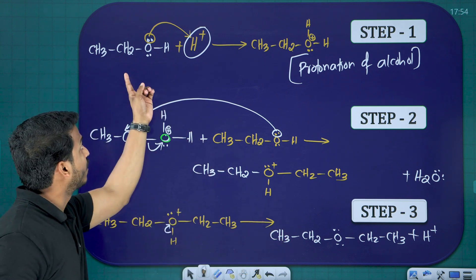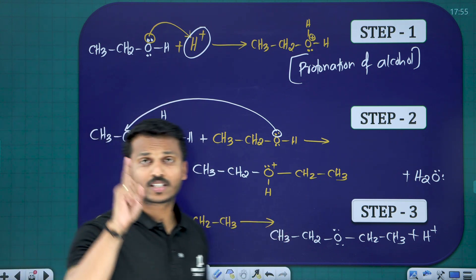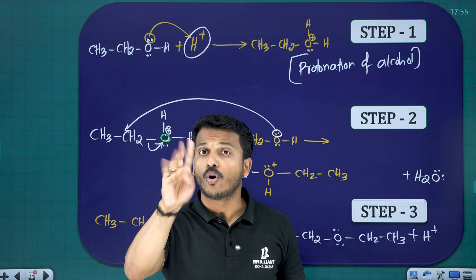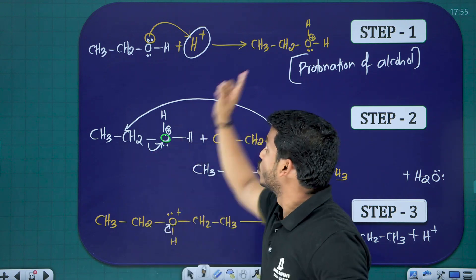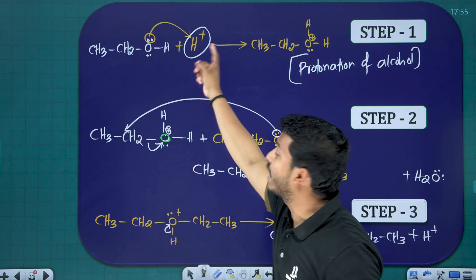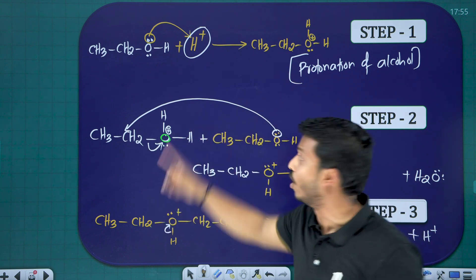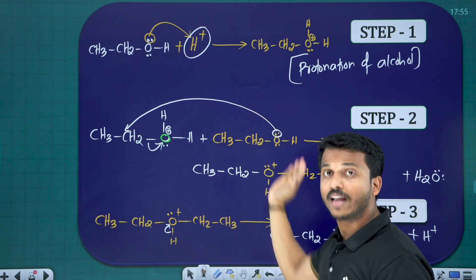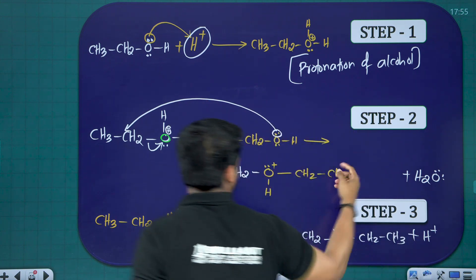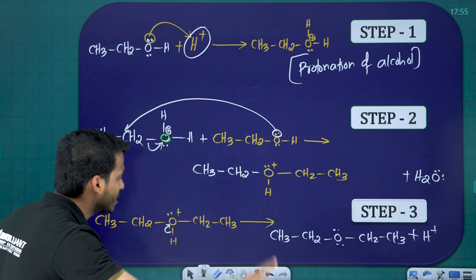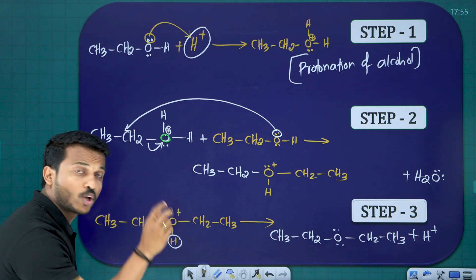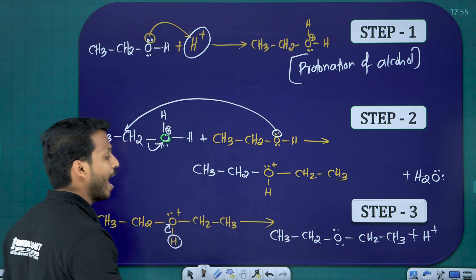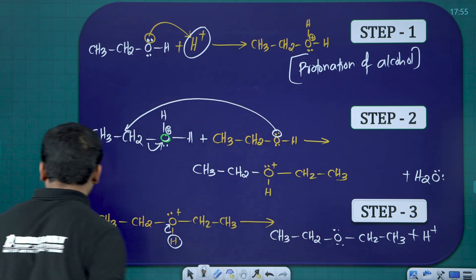So you can convert ethanol to ethoxyethane. Don't forget the temperature: 413 kelvin. To summarize: in step one, ethanol reacts with H+ — protonation of alcohol. In step two, a second ethanol reacts and water is removed — dehydration. In the last step, H+ is removed — deprotonation. That is how you convert ethanol to ethoxyethane.